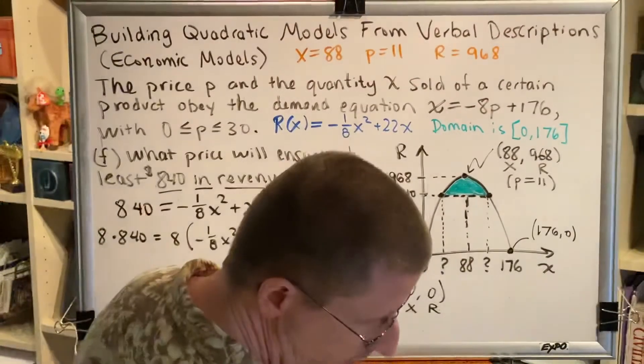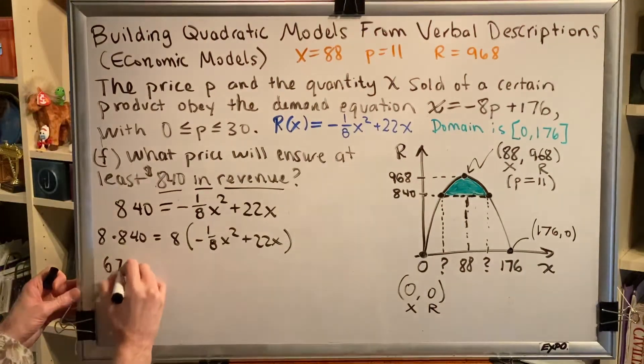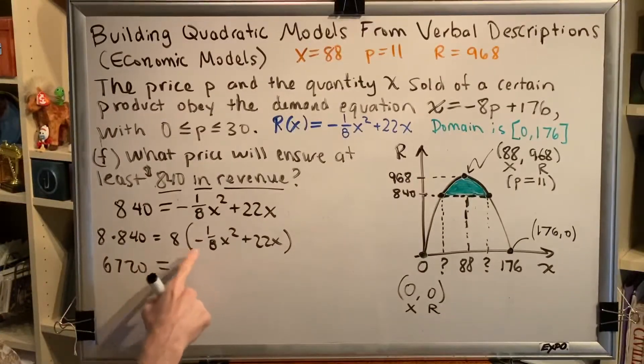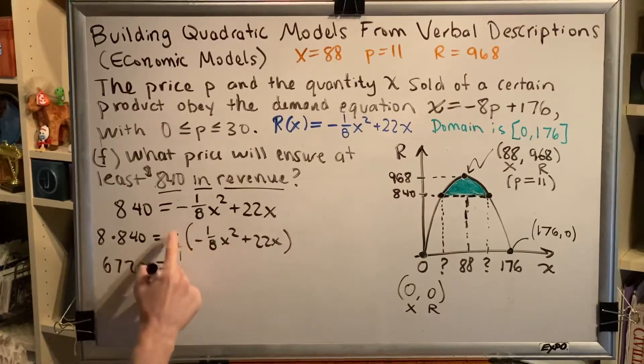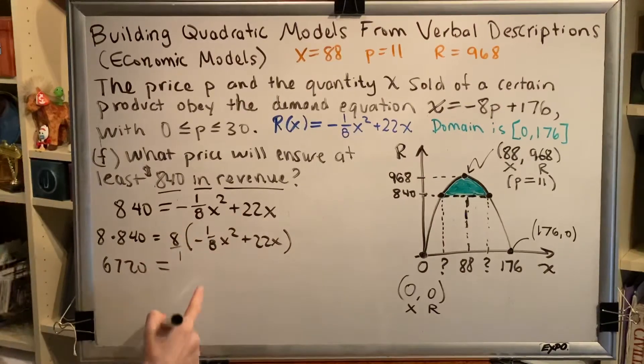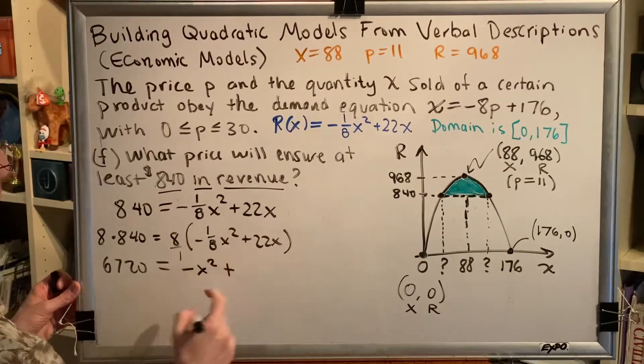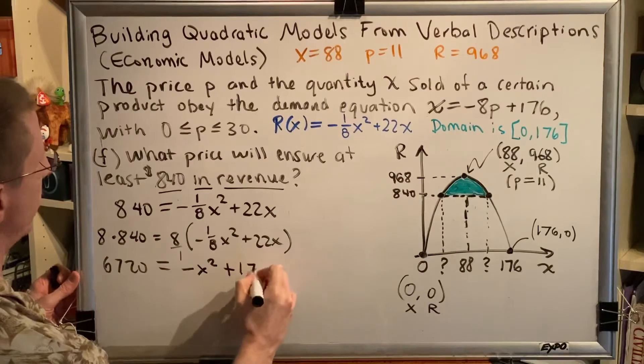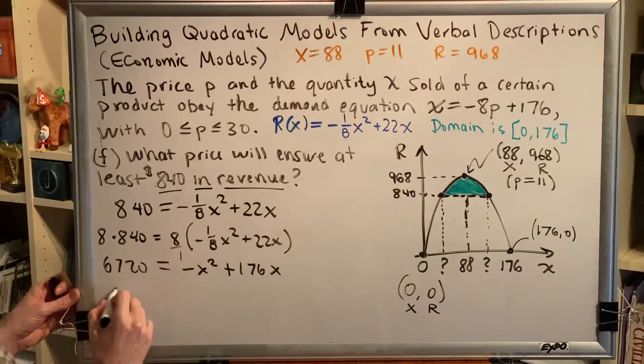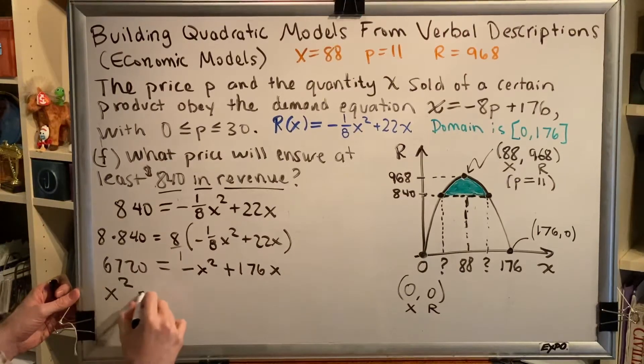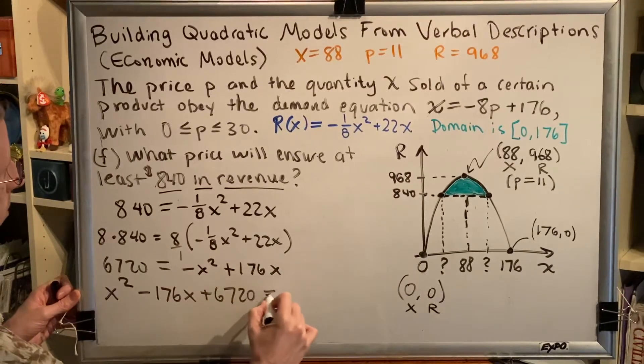So 8 times 840 is going to equal 8 times -1/8x² + 22x. 8 times 840... 8 times 1/8 is 1 because these are reciprocals. When you multiply 8/1 by 1/8, the 8ths cancel and you're just left with 1. Of course, we still have this negative. So -x² + 176x. Now move all terms to the left side. When a term changes sides, it changes signs. So I get x² - 176x + 6720 = 0.